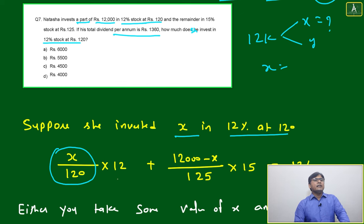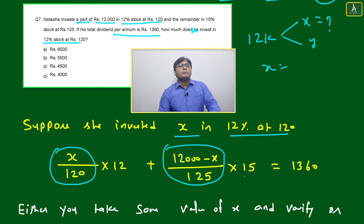This is number of shares times dividend. Investment divided by market value gives you number of shares. Number of shares times dividend percentage gives you the total dividend value. Same thing here: number of shares times 15. That equals 1,360.